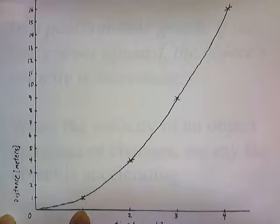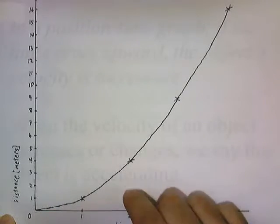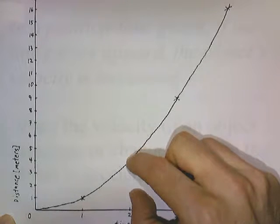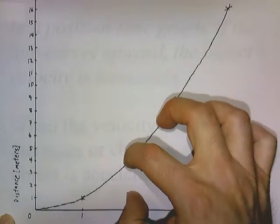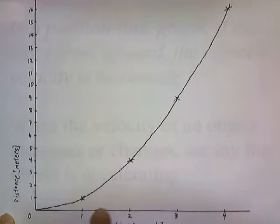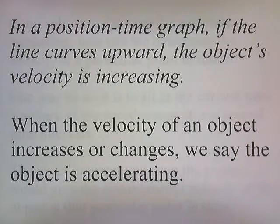This curved line shows that the object is moving faster and faster as each second passes. From 0 to 1 seconds, it covers 1 meter. But from 1 to 2 seconds, it covers 3 meters — a much greater distance in the same time interval, showing the velocity is increasing. The ratio is 3 to 1, so the object is moving faster in the second time interval. In a position-time graph, if the line curves upward, the object's velocity is increasing.